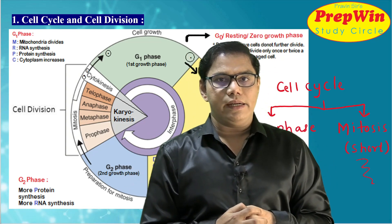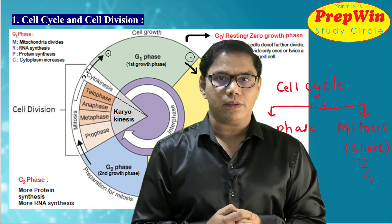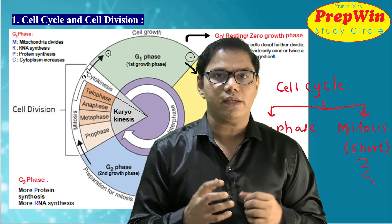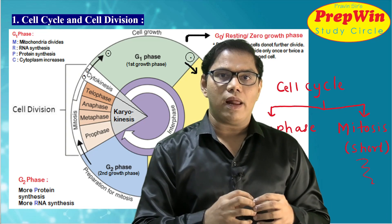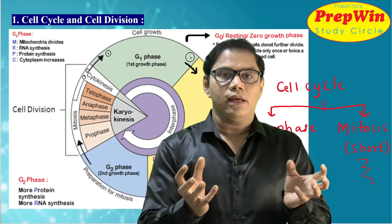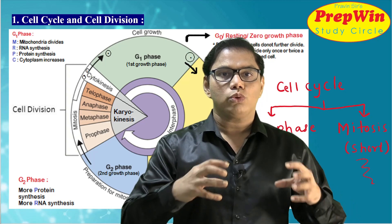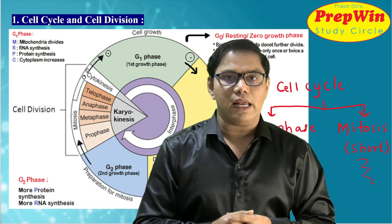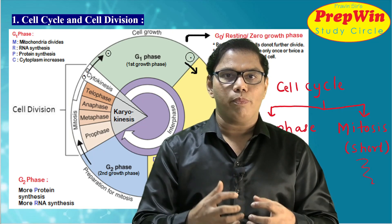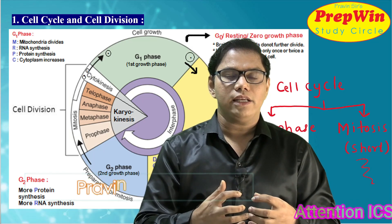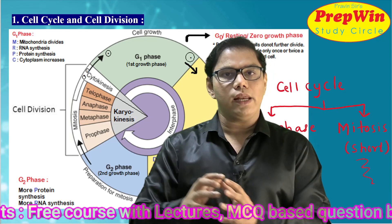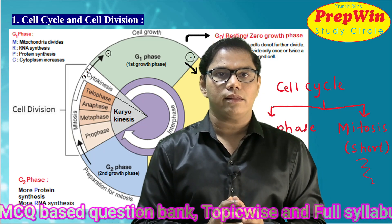Now that we have understood what interphase is, let us understand what happens during interphase. The cell prepares itself for cell division, so all parts of the cell — cytoplasm, mitochondria, chromosomes — need to duplicate and double. When one mother cell divides into two daughter cells, those two daughter cells must have everything the mother cell had. So during interphase, all the material inside the cell undergoes duplication — all cell organelles are duplicated. And during mitosis, the cell actually divides into two.